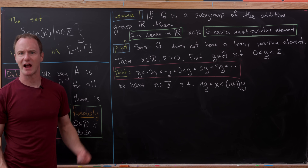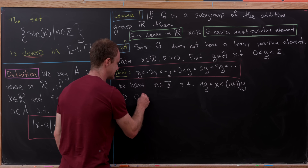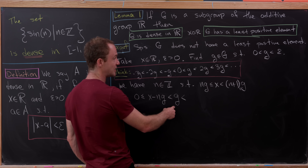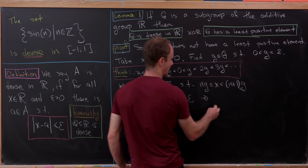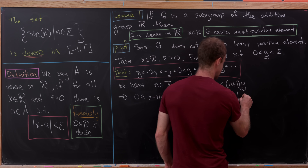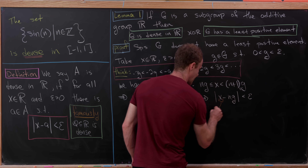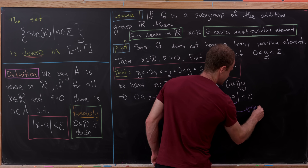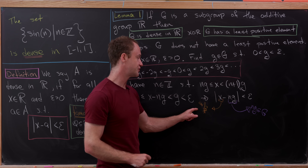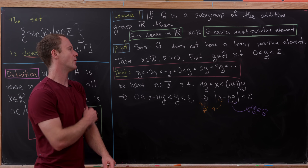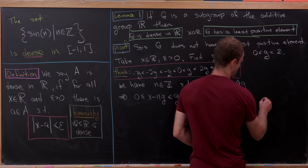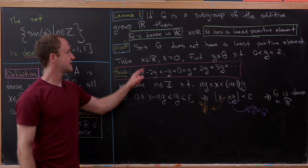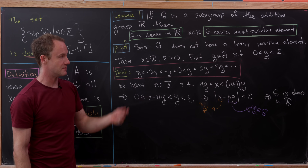Let's subtract n times g from all parts of that inequality, giving us 0 ≤ x − ng < g. But g was less than epsilon, and since x − ng is non-negative, this quickly implies that the absolute value of x − ng is less than epsilon. Since x was our arbitrary real number and ng is an element of G (as G is a subgroup), we've found an element of G super close to our arbitrary real number — which is exactly what we needed. So G is dense in ℝ.